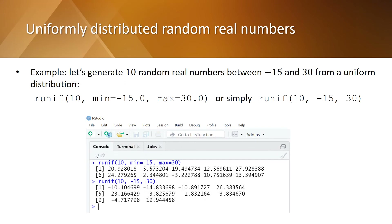Another example from a non-standard uniform distribution. This time, the minimum value of the distribution is minus 15 and the maximum value is 30. You can simply write this command as runif(10, -15, 30) and you get the results in RStudio.